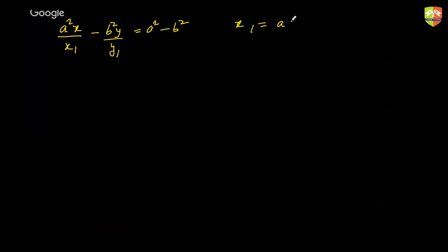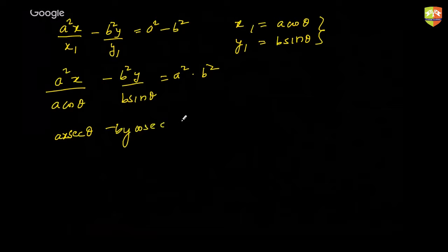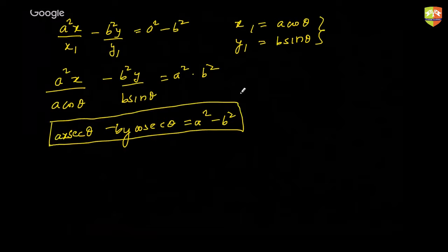Similarly, the equation of the normal in parametric form: starting from the point form a²x/x1 - b²y/y1 = a² - b², replace x1 with a·cosθ and y1 with b·sinθ. This gives a²x/(a·cosθ) - b²y/(b·sinθ) = a² - b², which simplifies to ax·secθ - by·cosecθ = a² - b². Please remember this parametric form of the equation of the normal.